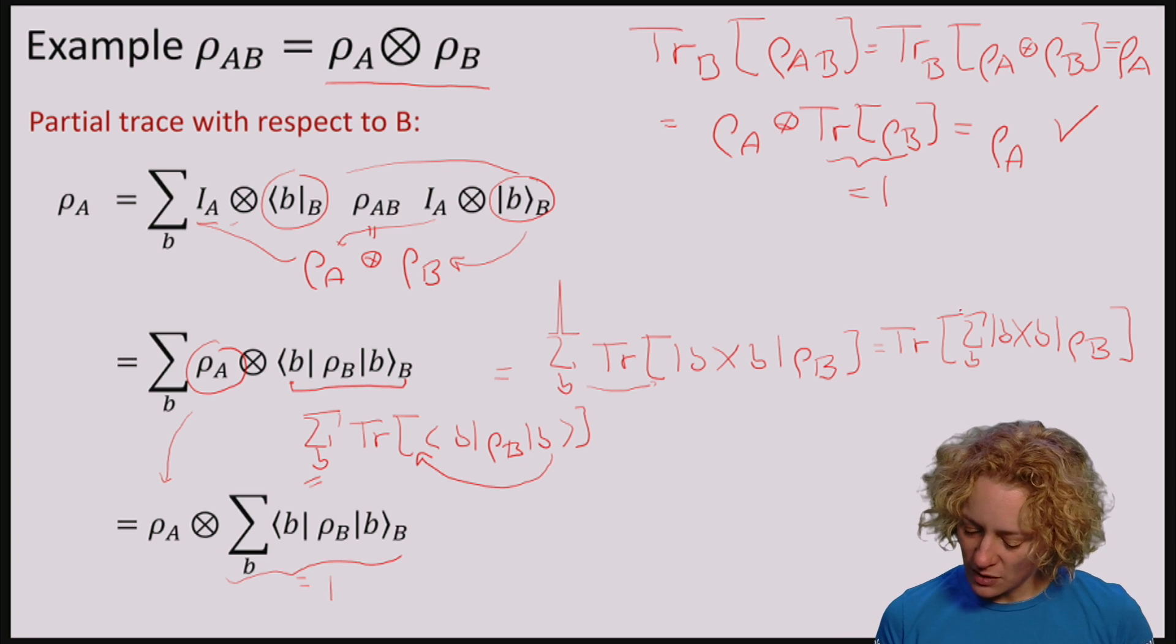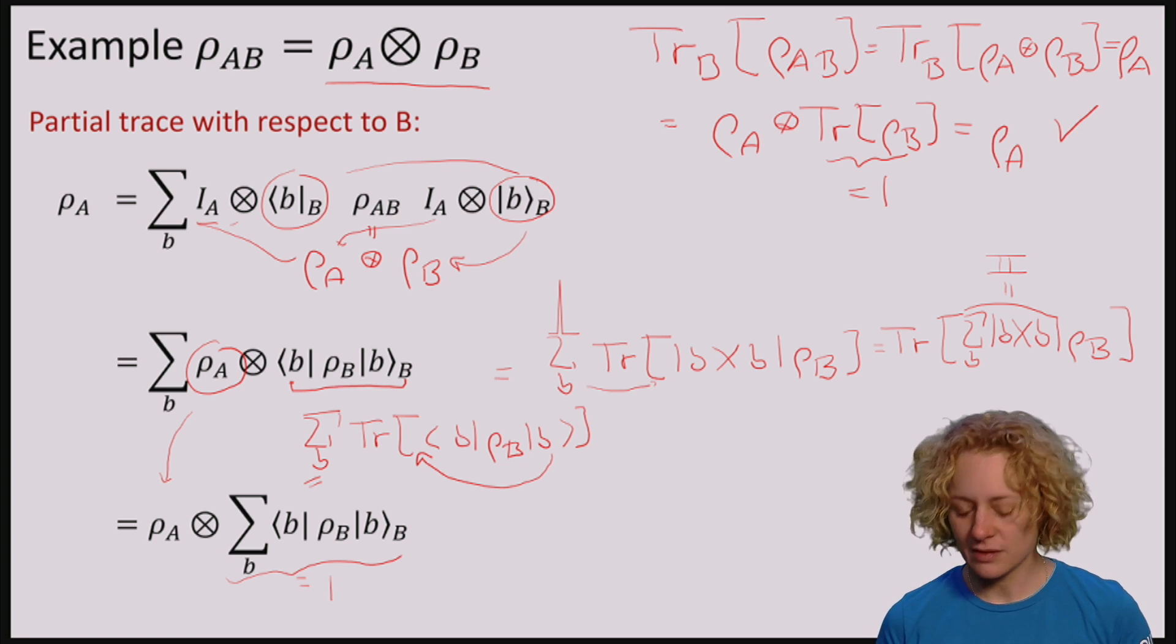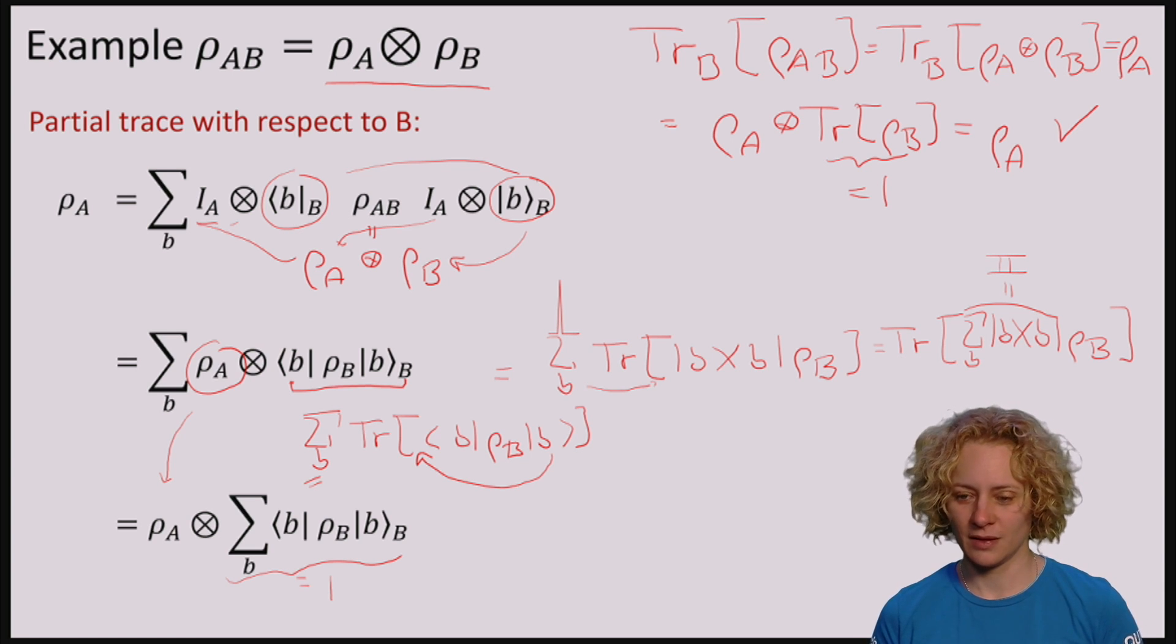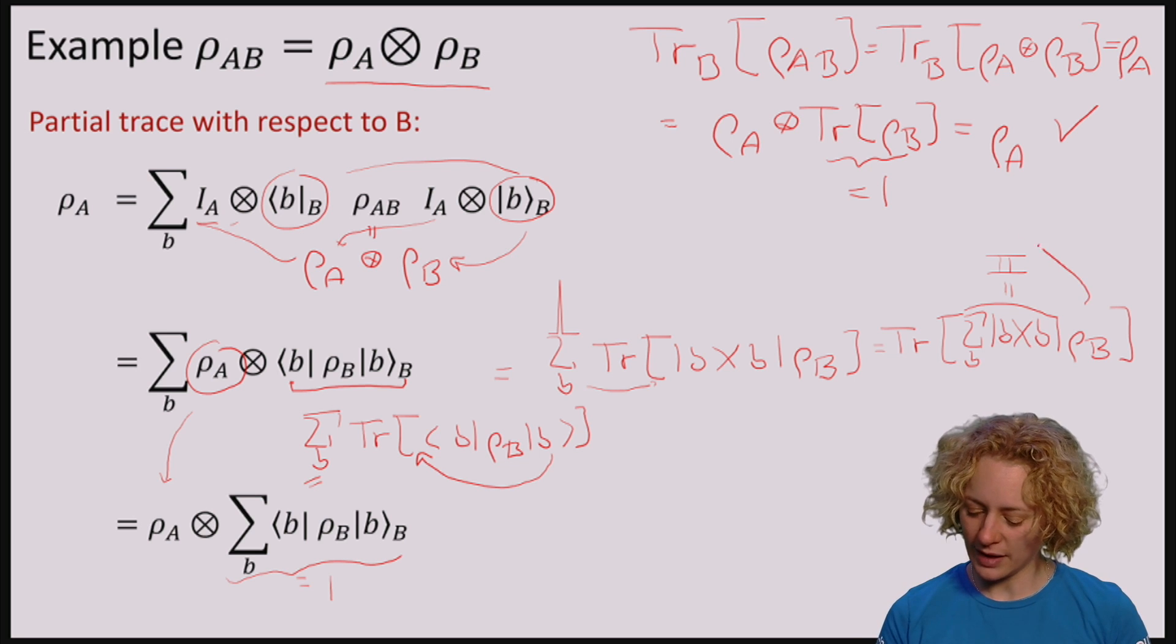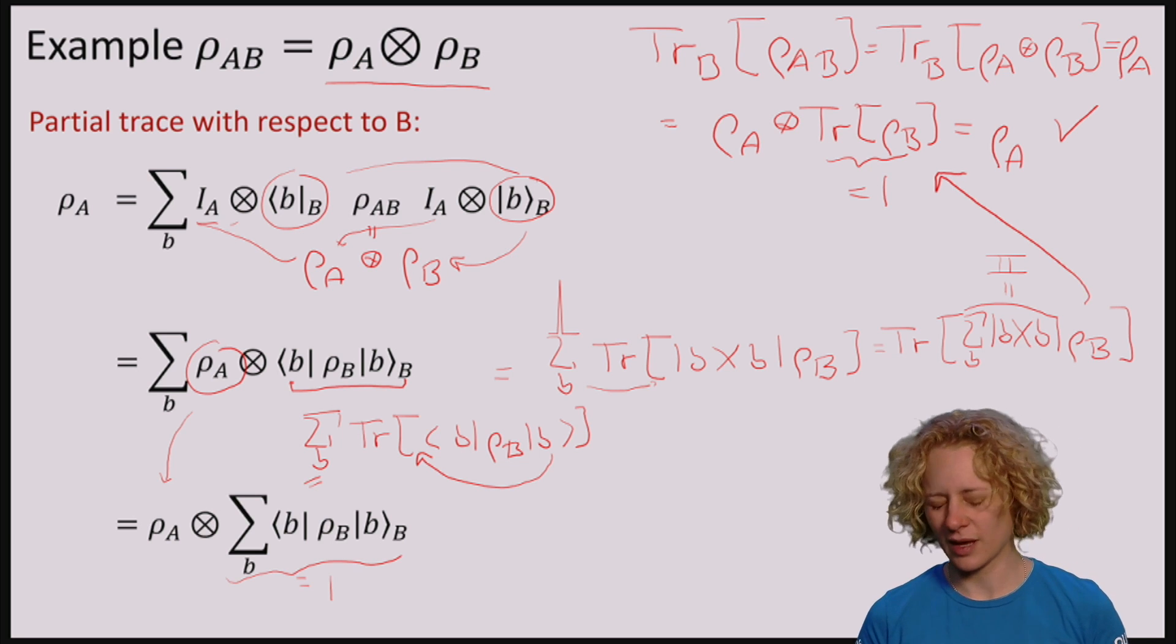But because we are measuring of course in a basis, the sum over all basis elements of this form is the identity. So again, we end up exactly in the same place as before.